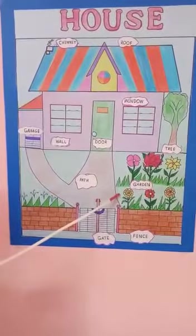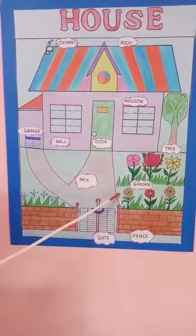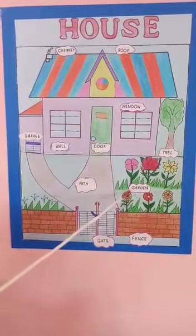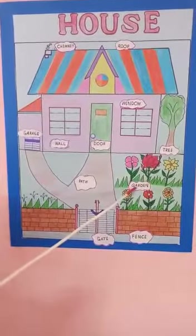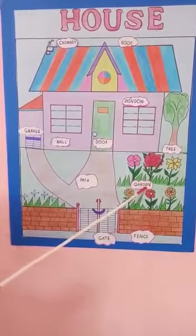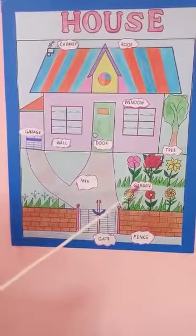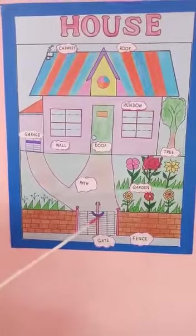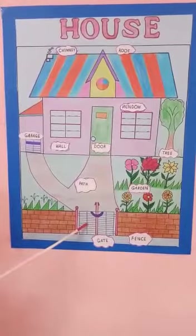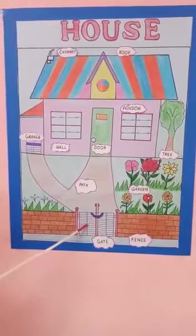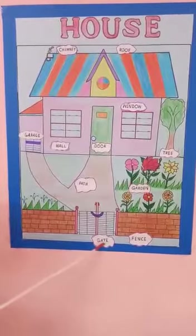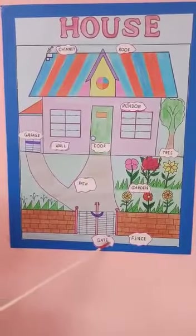Children, do you have a garden in front of your house? Read the spelling of garden. G-A-R-D-E-N. Garden. This is the main gate. We have a main gate in our own house also. G-A-T-E. Gate.